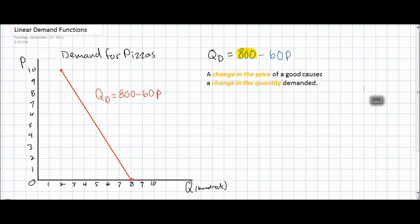This would be illustrated on a demand function as a change in price and a movement along. For example, in our graph here, at a price of $2, 680 pizzas are demanded, but at a price of $4, 560 pizzas are demanded. This is simply a change in the P variable in our linear demand equation.